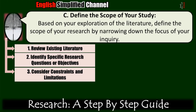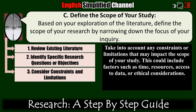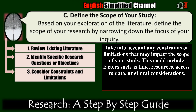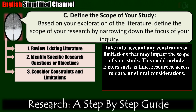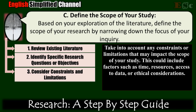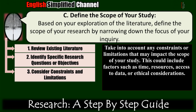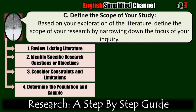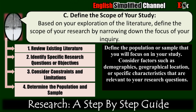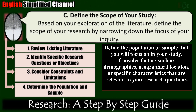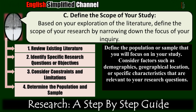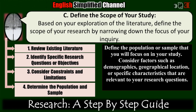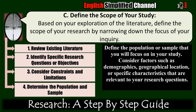Third, consider constraints and limitations. Take into account any constraints or limitations that may impact the scope of your study. This could include factors such as time, resources, access to data, or ethical considerations. Be realistic about what you can feasibly accomplish within these constraints. Fourth, determine the population and sample. Define the population or sample that you will focus on in your study. Consider factors such as demographics, geographical location, or specific characteristics relevant to your research questions. Determine the size and composition of your sample based on practical considerations and the objectives of your study.